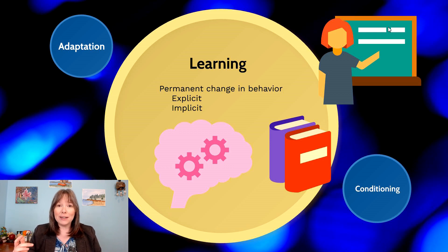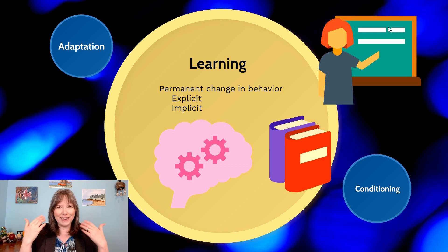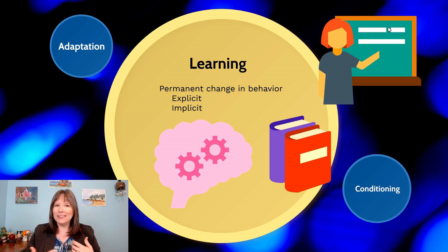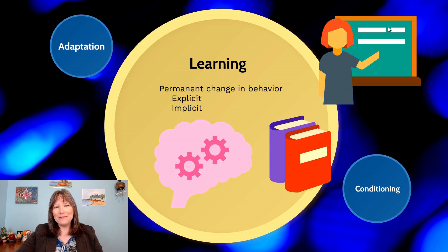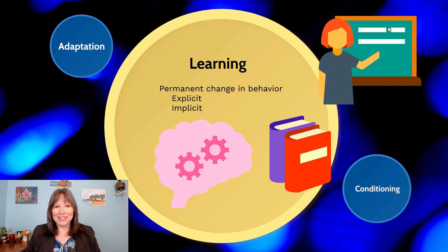If you think back to Unit 1, behaviorists defined psychology as a natural science of observable behaviors that had no room for the internal thought process. They were not concerned about our thoughts, our cognitions, our feelings, or our decisions — only our observable behavior on the outside. So they're really only looking at a permanent change in your behavior, not changes in your thoughts, knowledge, or understanding.